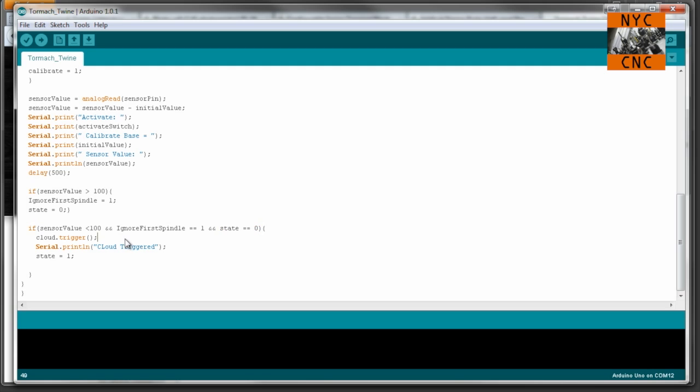Then state equals zero. I'll come back to that in a second. Cloud.trigger tells our Twine to go ahead and do what it needs to do. Then state equals one. If you're not familiar with the state concept in programming, right now you don't want to receive a text message again until the spindle has been turned back on. If it remains idle, you don't want the program to keep sending text messages.